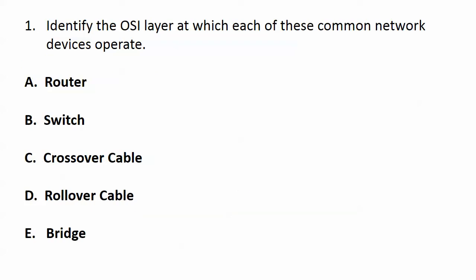Let's dig into question one. Identify the OSI layer at which each of these common network devices operate. We've got a router, a switch, a crossover cable, a rollover cable, and a bridge.